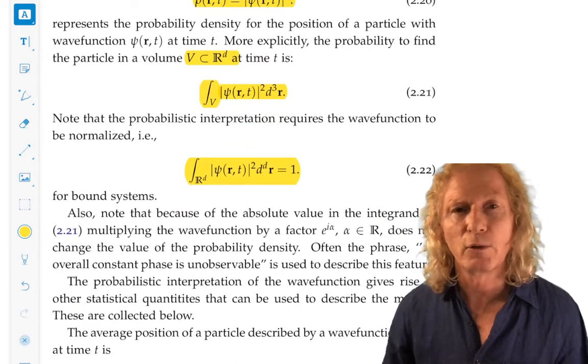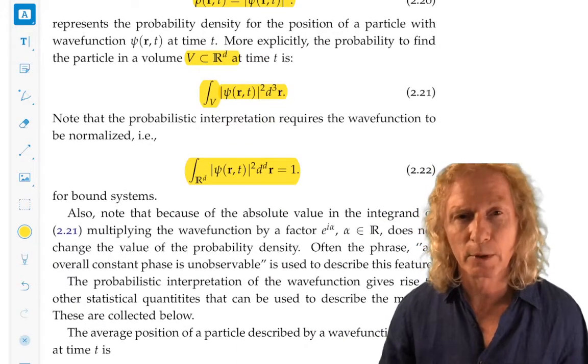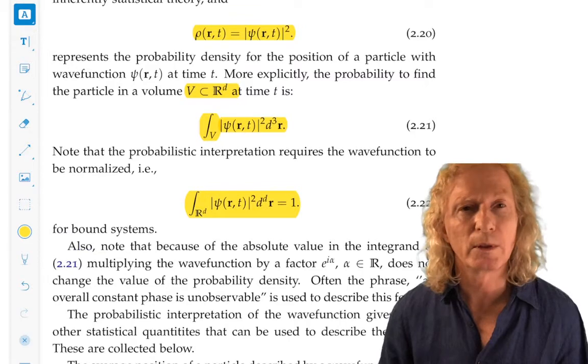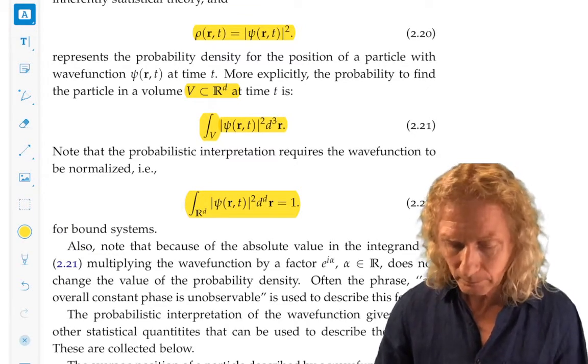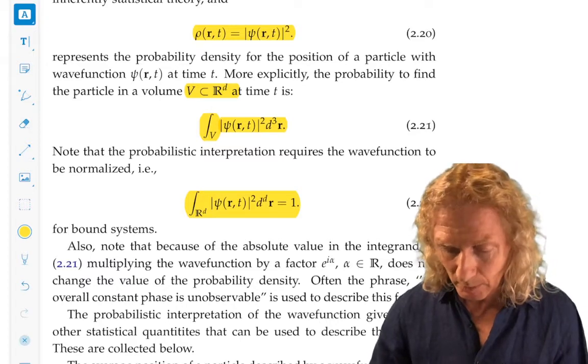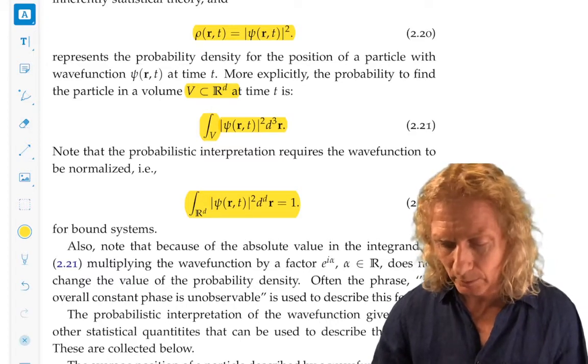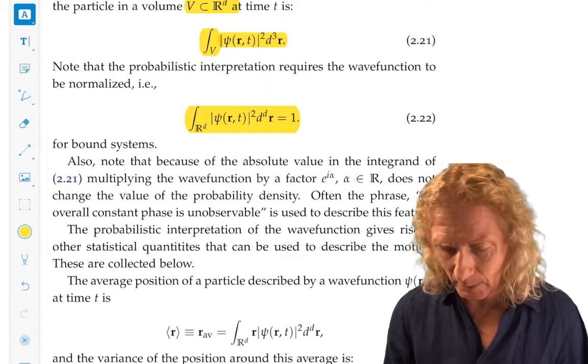And that's why normalization is very important for that interpretation. That's why we're always going to insist on normalization. Whenever we find a wave function, normalize it. What if it can't be normalized? Interesting question. We'll meet something related to that later.